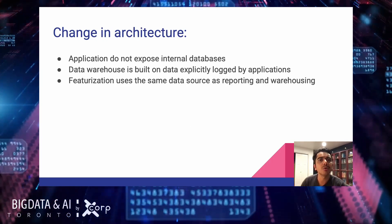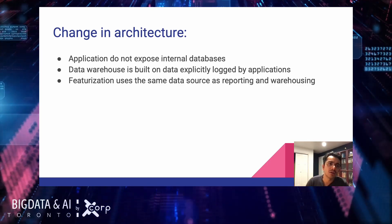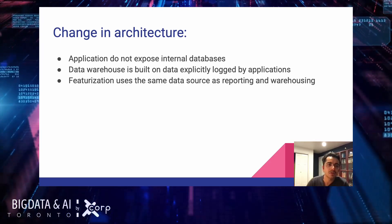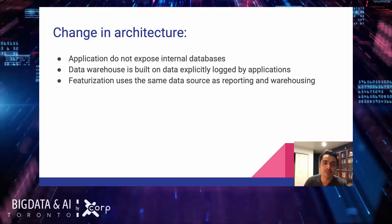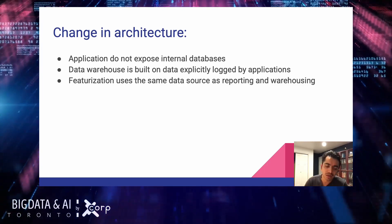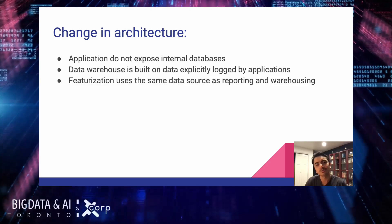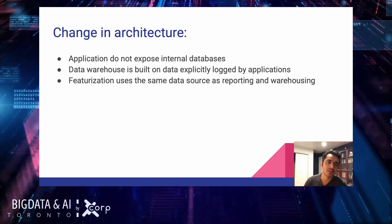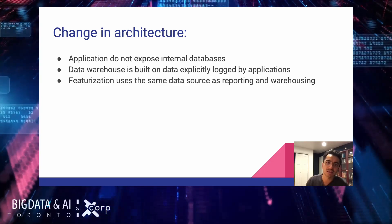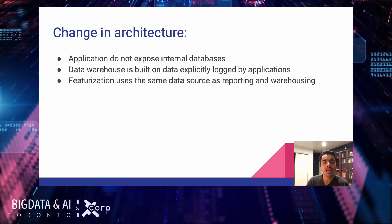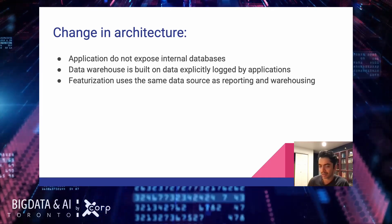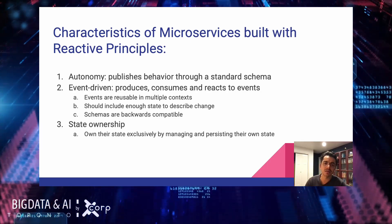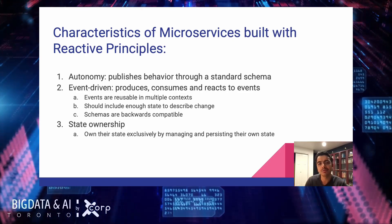In terms of architectural differences from how we used to build these systems: first, applications do not need to expose their internal databases for reporting needs, because what they expose are these events which trigger downstream processing and get collected for BI and machine learning tasks. Data warehouses are built on this explicitly logged data from applications, and featurization uses the same data sources as reporting and warehousing.